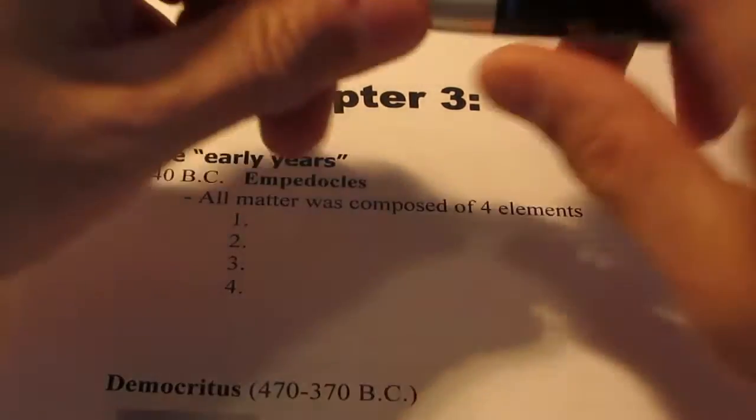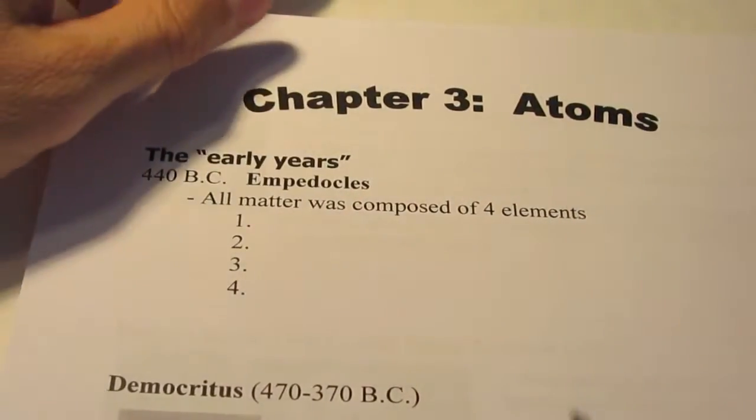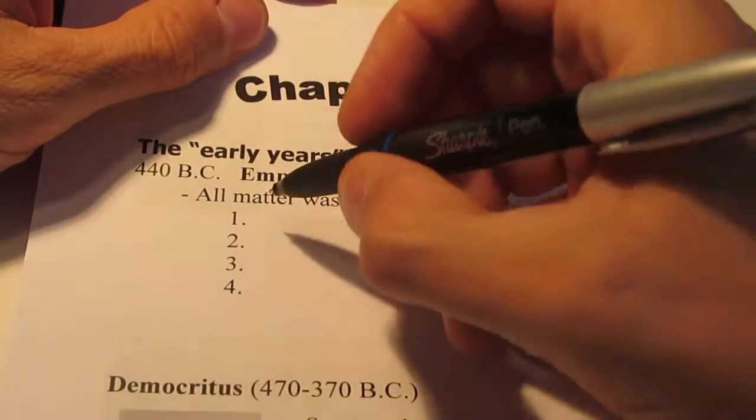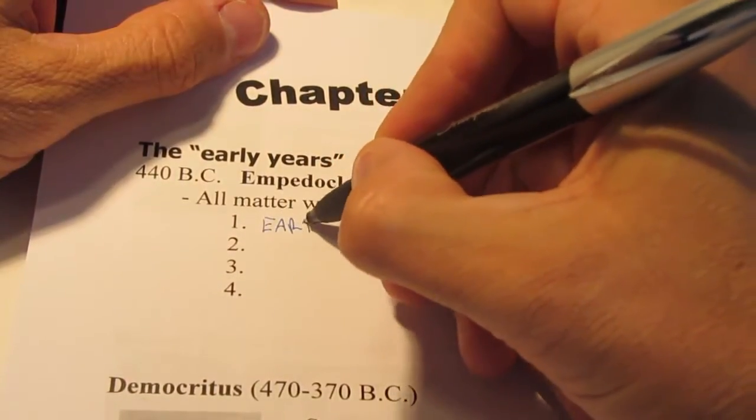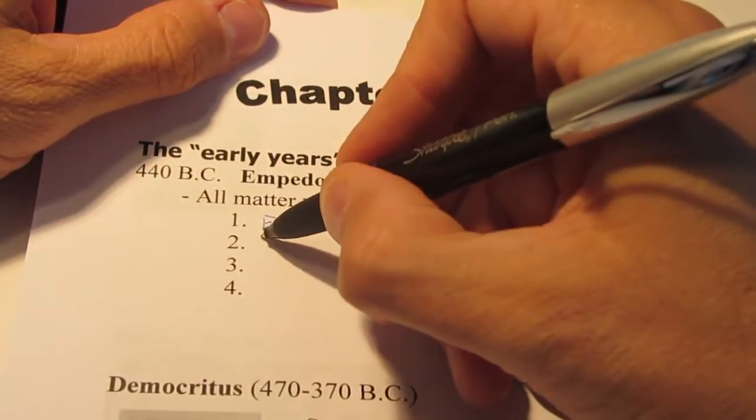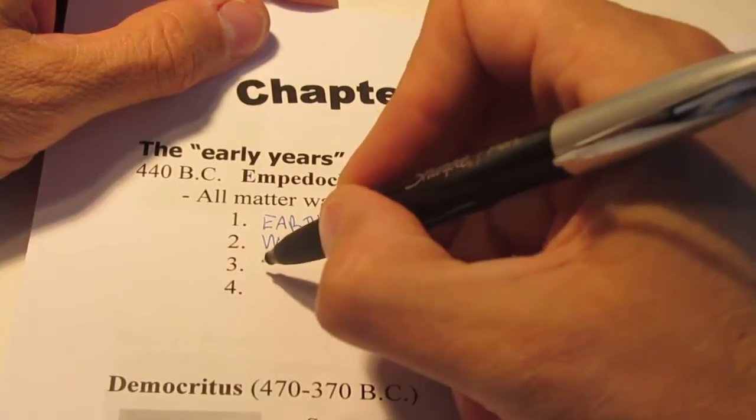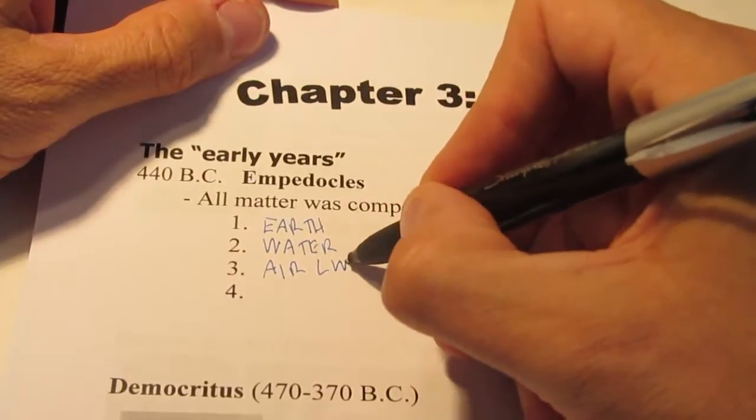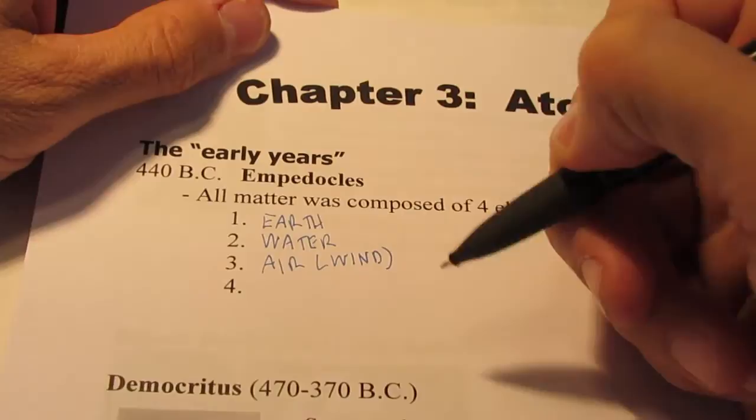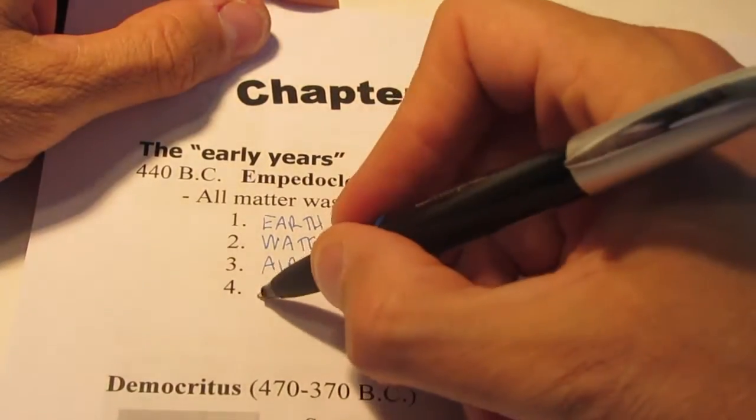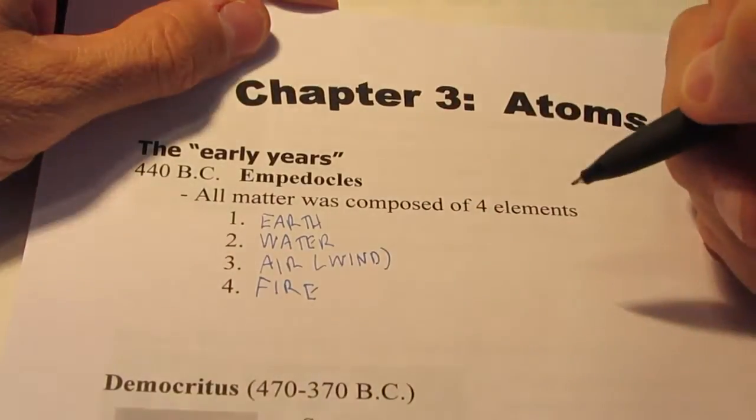In 440 B.C., Greek philosopher Empedocles proposed that all matter was composed of four elements. He envisioned matter being made up of either earth or water, air, which sometimes is referred to as wind, and you all know the last one. You've heard this before, haven't you?